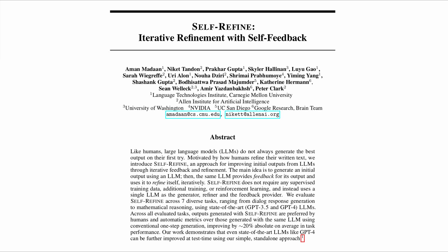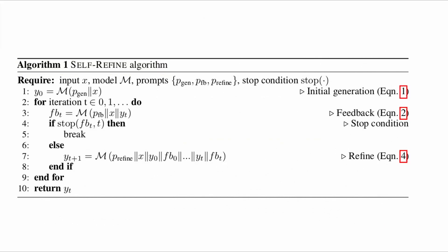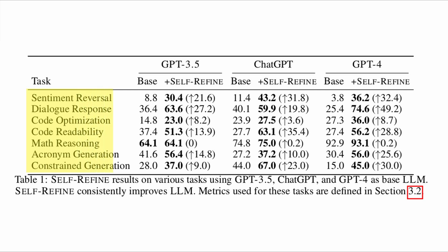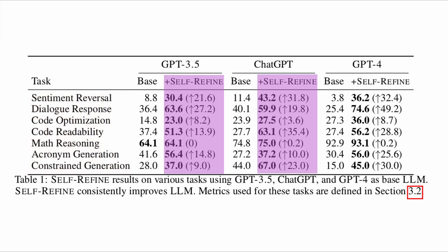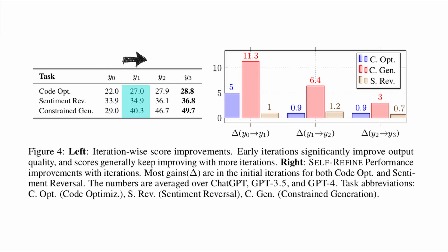This is illustrated by the research study 'Self-Refine: Iterative Refinement with Self-Feedback' by Madaan et al. in 2023. The main idea is to generate an initial output using an LLM, then the same LLM provides feedback for its output and uses it to refine itself iteratively. Self-Refine does not require any supervised training data, additional training, or reinforcement learning — instead using a single LLM as the generator, refiner, and feedback provider. They tested this across seven different tasks including text and code generation, and found that Self-Refined versions outperformed base models such as GPT-4, with outputs continuing to improve with more iterations.